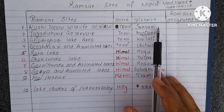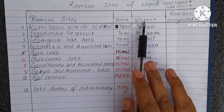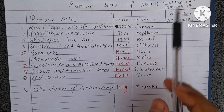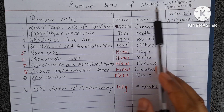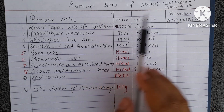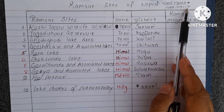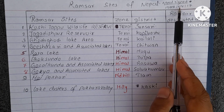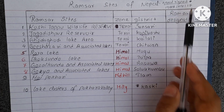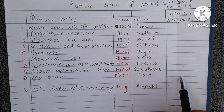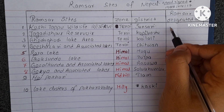An important topic: why were these sites listed under Ramsar, and why did Nepal sign the Ramsar Convention? Nepal signed the Ramsar Convention on April 17, 1988 — that is, date 04/17. So remember: April 17.